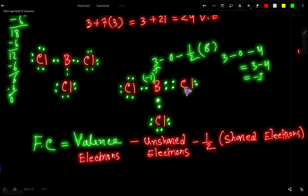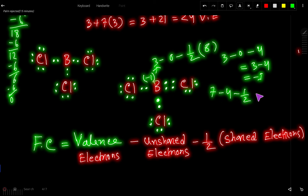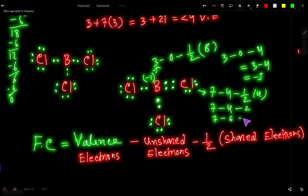Now let us find the formal charge for the chlorine atom that forms the double bond. Valence electrons for chlorine = 7, unshared electrons = 4 (two lone pairs), shared electrons = 4. So formal charge = 7 − 4 − 2 = 7 − 6 = +1. The formal charge for that double-bonded chlorine is +1.